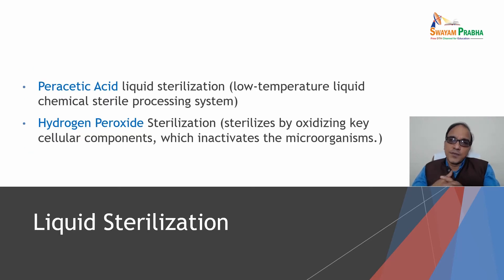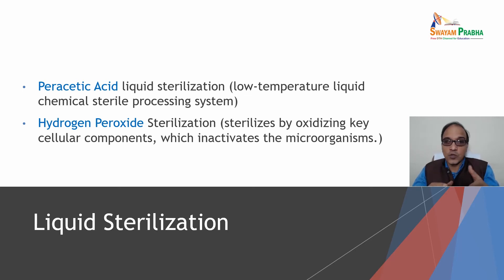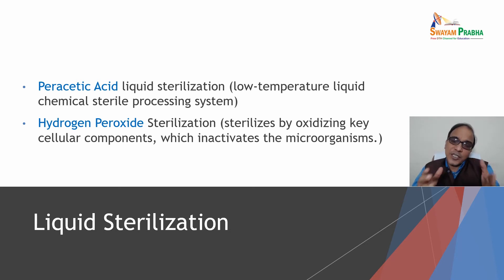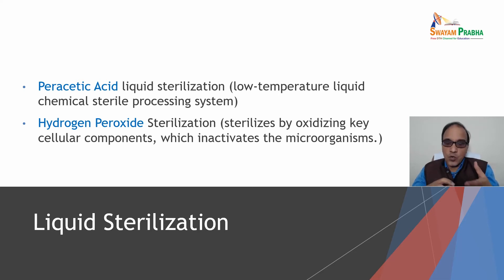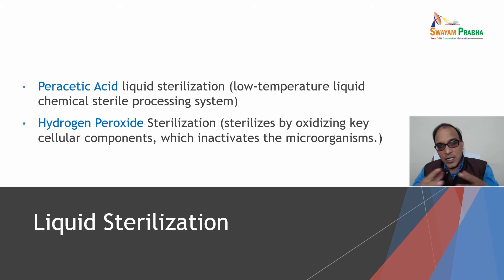Liquid sterilization: peracetic acid is used at low temperature in a liquid chemical sterile processing system. Hydrogen peroxide sterilization may also be used. These agents sterilize by oxidizing key cellular components, which inactivates the microorganism. So either peracetic acid or hydrogen peroxide may be used for liquid sterilization.